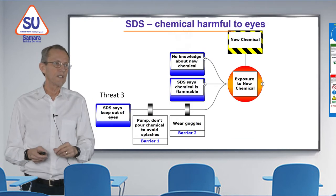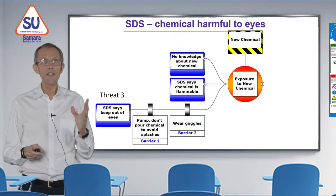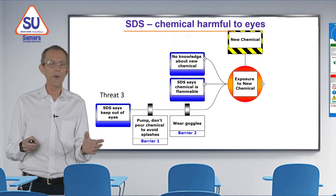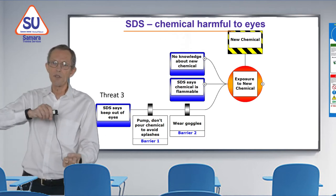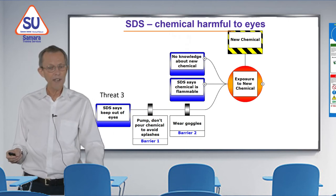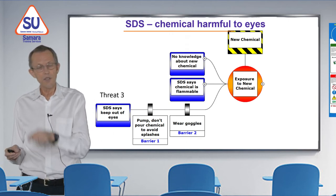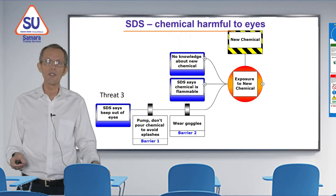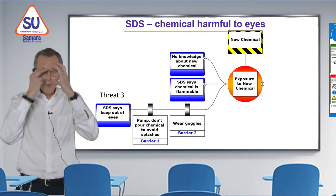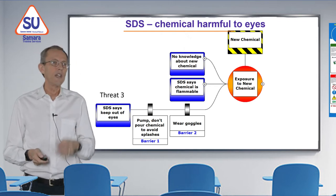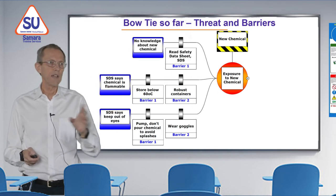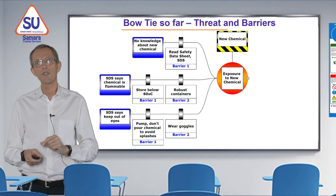Threat three says the chemical is harmful if it gets in the eyes. We could manage that threat by pumping the chemical instead of pouring it — using a pipe and motor to fill containers without splashes, protecting our eyes. We could also wear goggles. So we now have three threats and five barriers managing those threats.